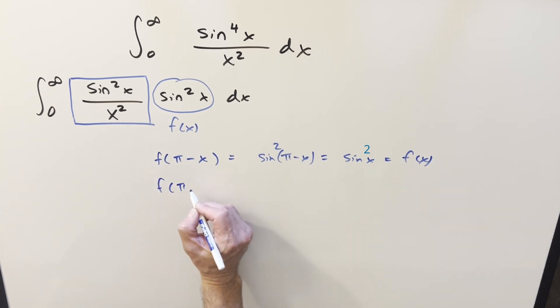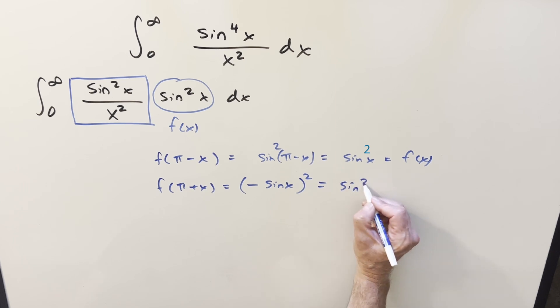And then doing the check the other way, what happens when we plug pi plus x in for sine x? That's actually going to be a minus sine x, but this whole thing is squared. So what we get back is still sine squared x.